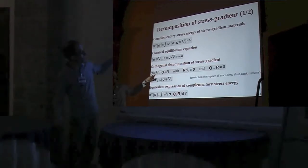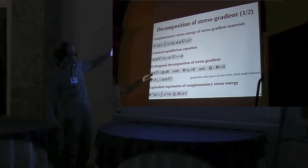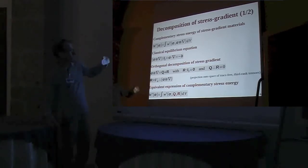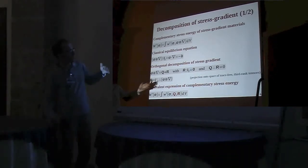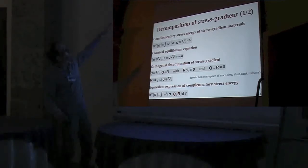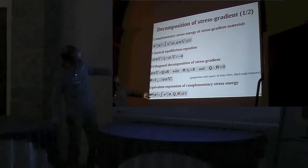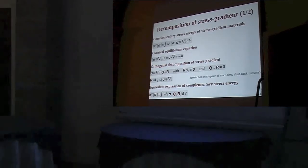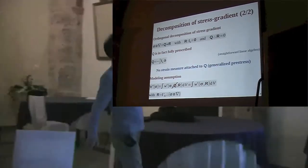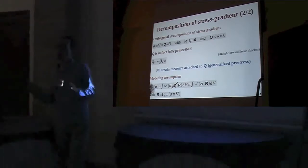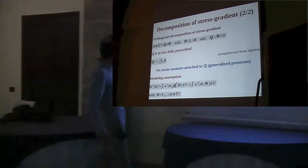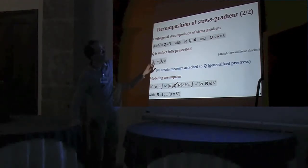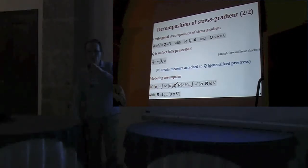This decomposition is a linear operation, meaning that R, the trace-free part of the stress gradient, is related to the full stress gradient through a linear operator I-prime, which is an orthogonal projector playing the role of the identity for trace-free third-rank tensors. Elementary linear algebra shows that the Q part of the stress gradient is fully defined by the body forces — there is no strain measure associated with it. In the minimization process, Q plays the role of a generalized pre-stress whose physical meaning remains unclear, so we chose to discard this contribution.